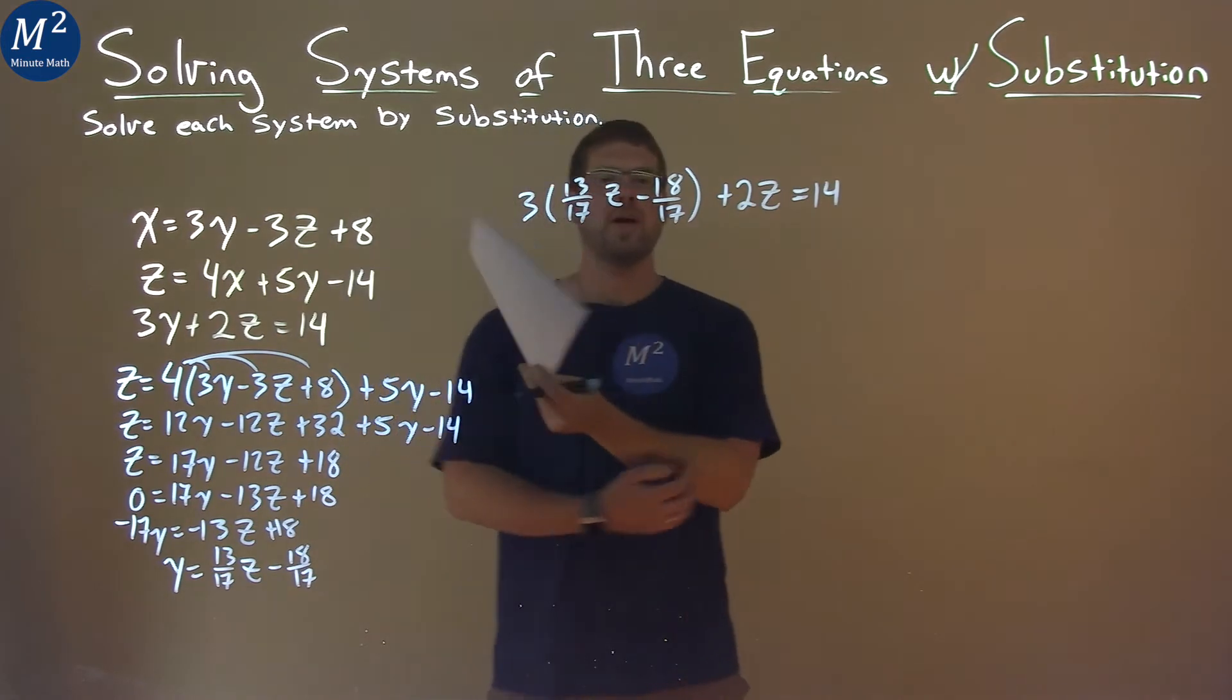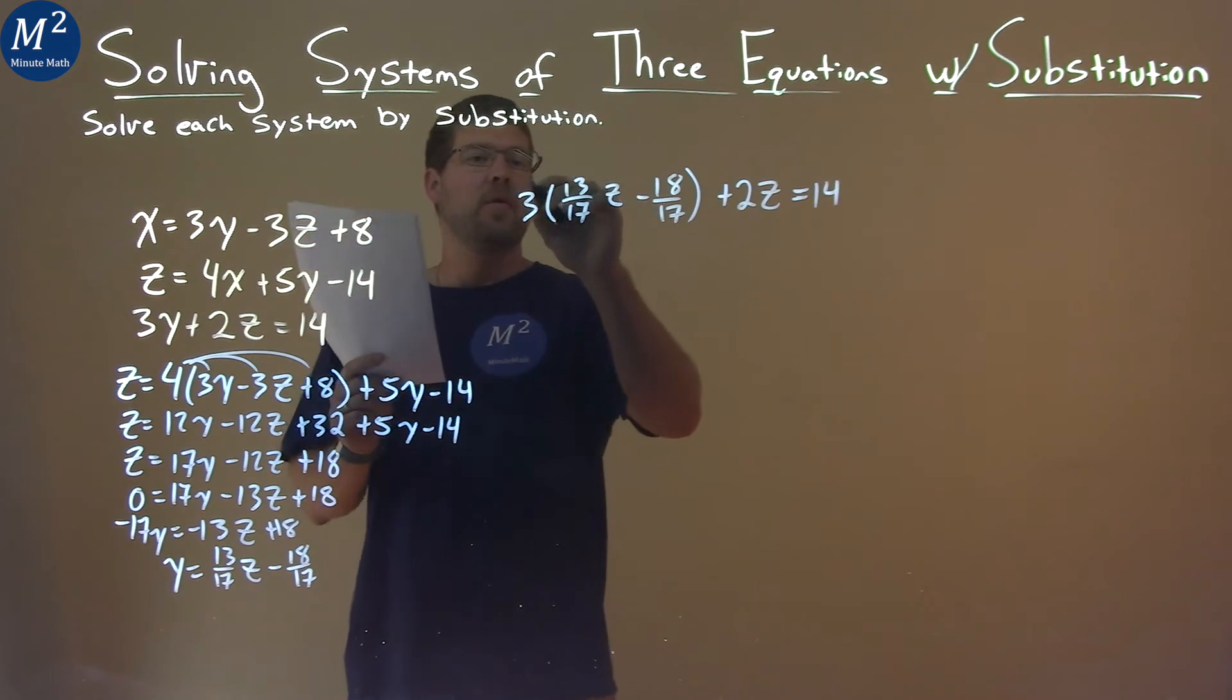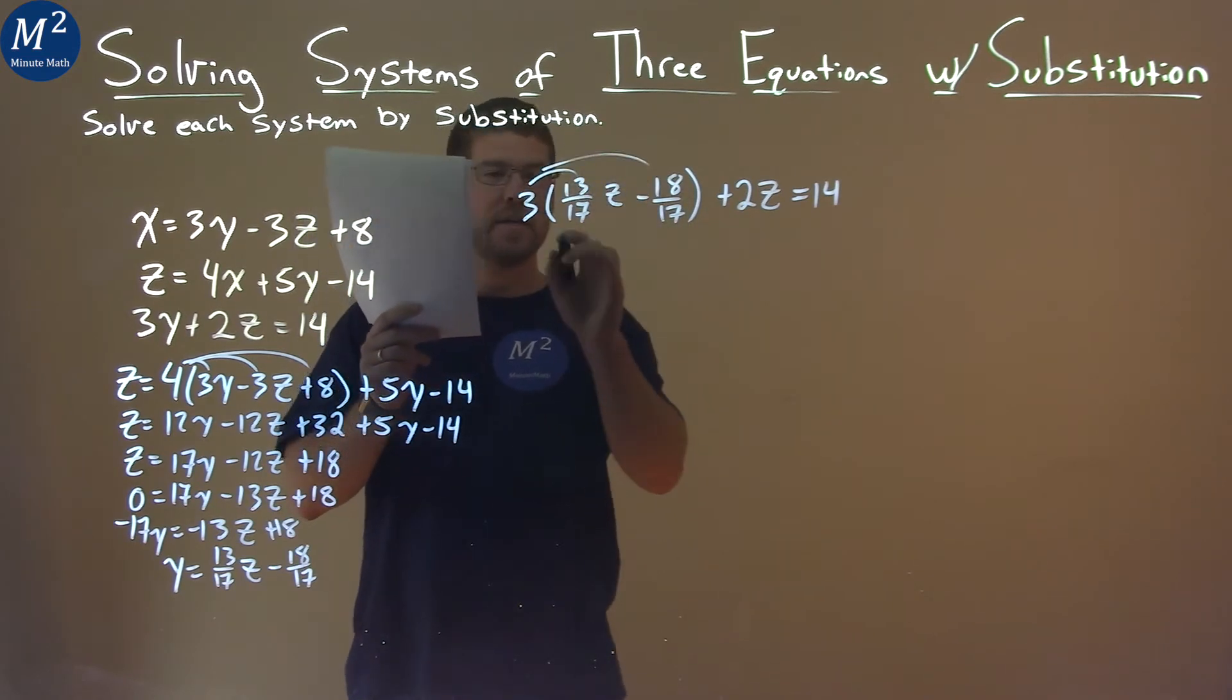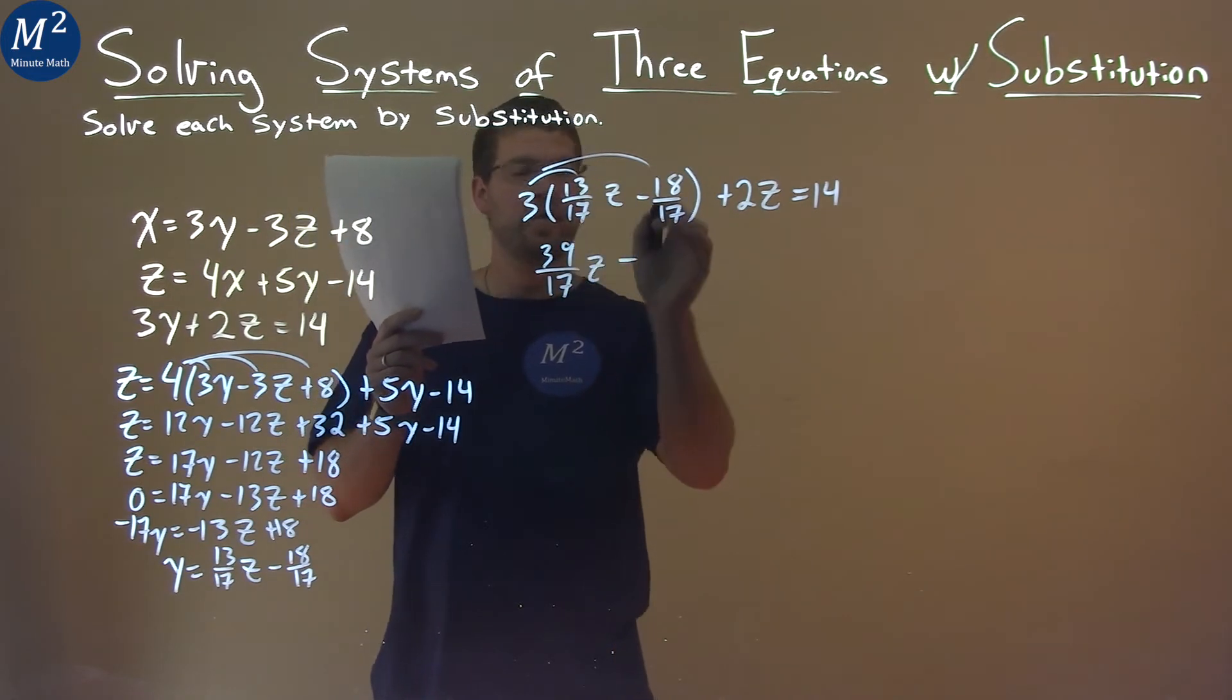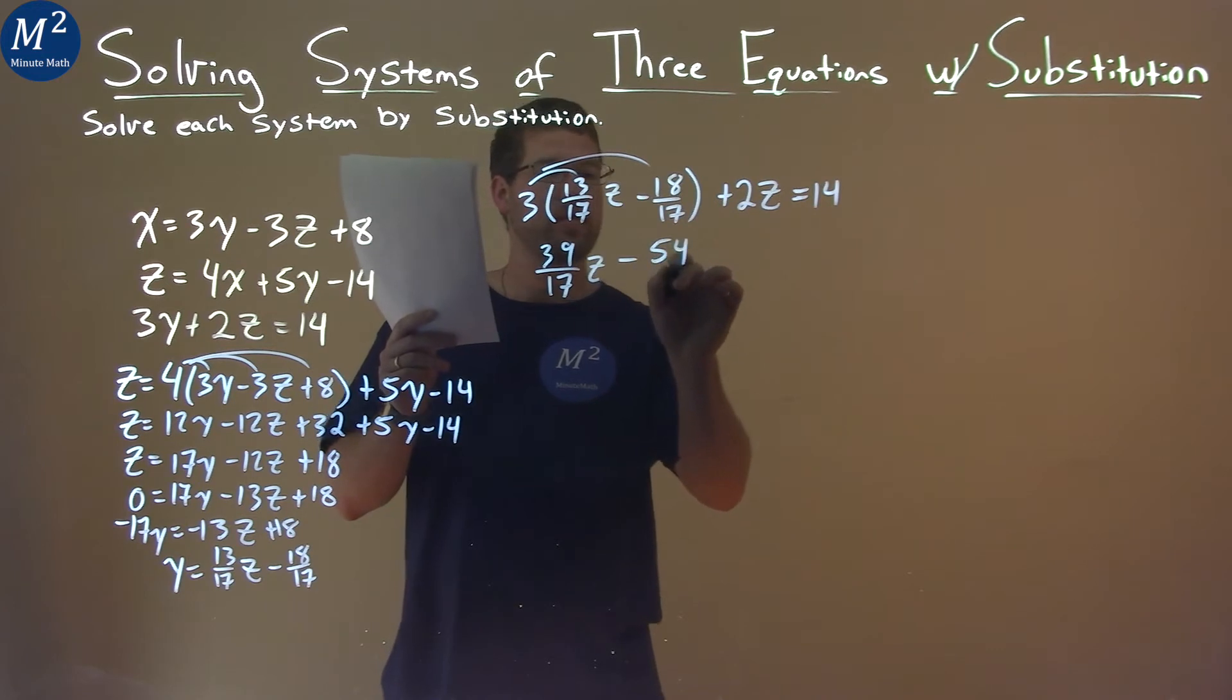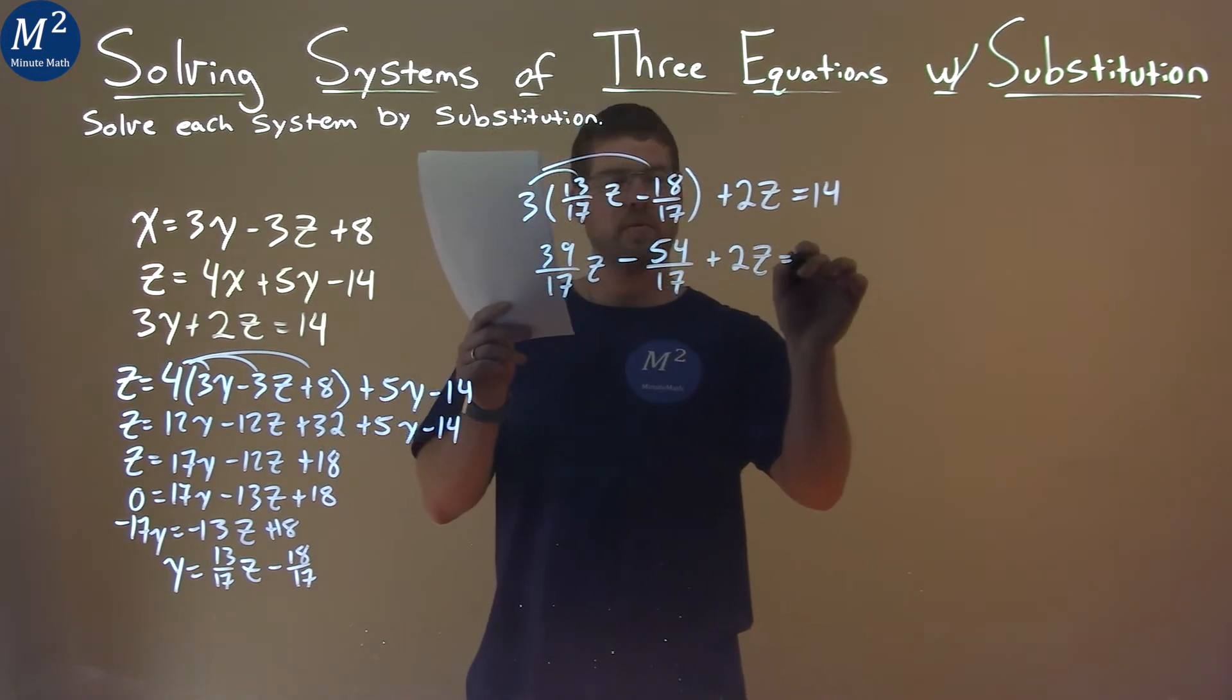And now we have to solve for z, or we can't. And we're going to do it. So, multiply 3 to both parts here, and 3 times 13 over 17 is 39 over 17, z. Minus, 3 times 18 is 54, over 17. And then we have plus a 2z, equals a 14.